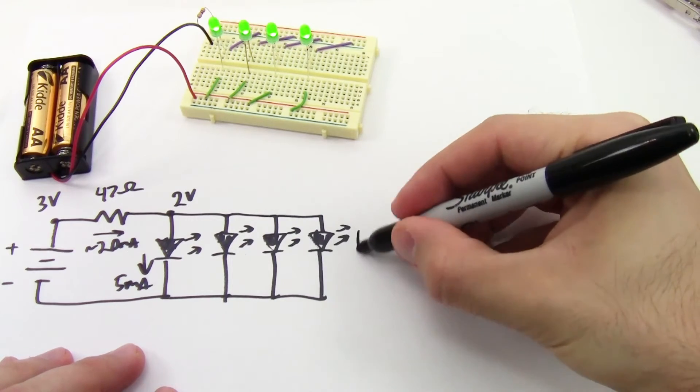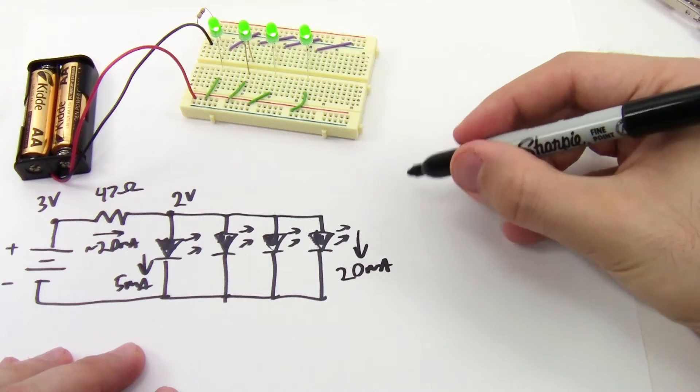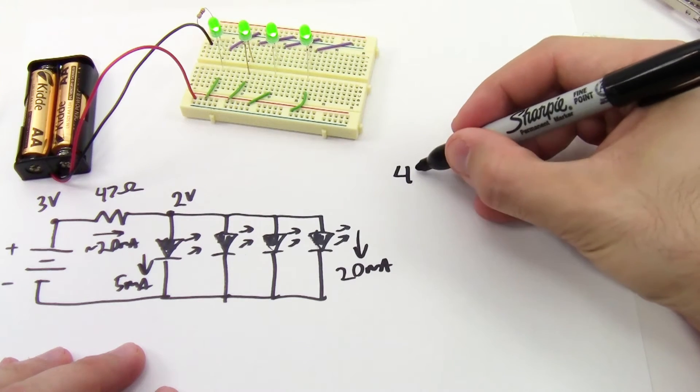So if I actually want 20 milliamps through each of these LEDs, that means I'm going to need 4 by 20 milliamps, or 80 milliamps, through that resistor.